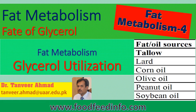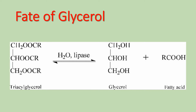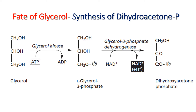Welcome to foodfeedinfo.com. This is Part 4 of fat metabolism. In this video we will look at the fate of glycerol, which is produced as a result of hydrolysis of triglyceride. In the digestive tract, a triglyceride is hydrolyzed into monoacylglycerol or diacylglycerol through lipases. As a result of complete hydrolysis of triacylglycerol or triglyceride, there is production of one glycerol and three fatty acids. These fatty acids are utilized for re-synthesis of triglyceride or they may get oxidized through different pathways for the production of energy, whereas glycerol has a different fate.